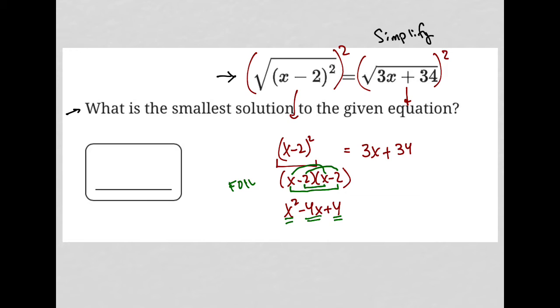So that's where x squared minus 4x plus 4 came from, and now it equals 3x plus 34. I'm going to combine like terms, subtracting 3x from both sides and subtracting 34 from both sides, which leaves me with x squared minus 7x minus 30 equals 0. I know I have a trinomial that I can factor.